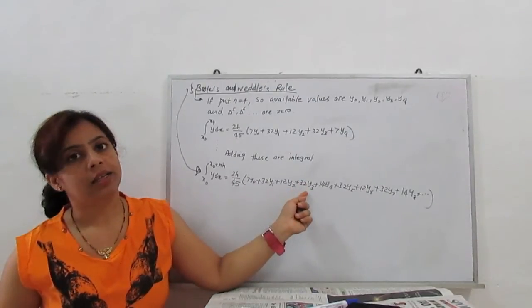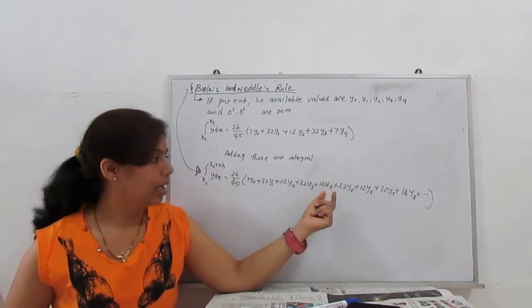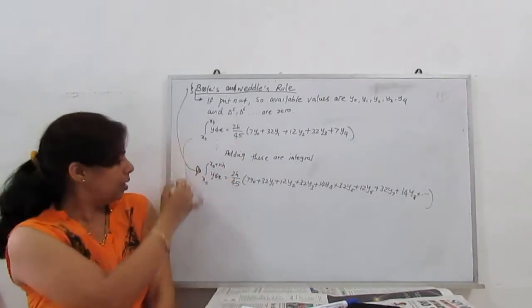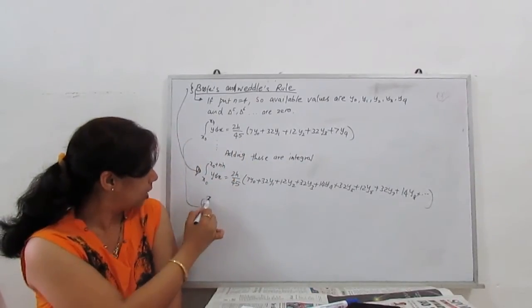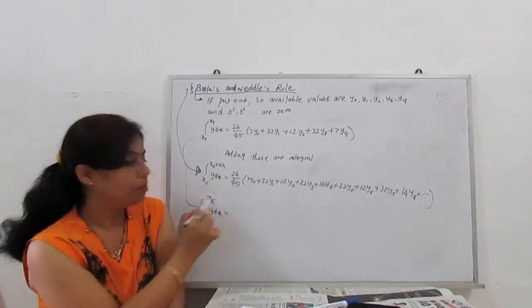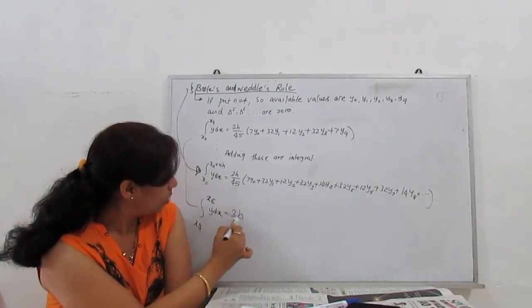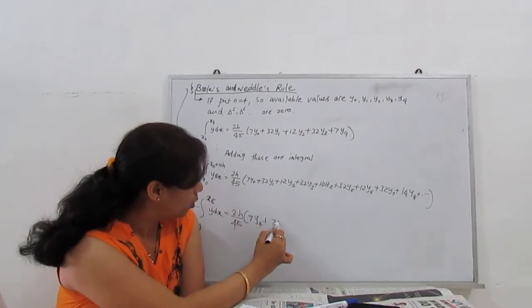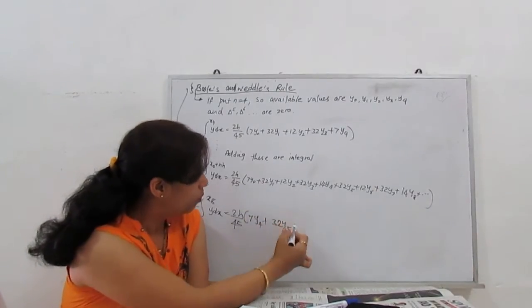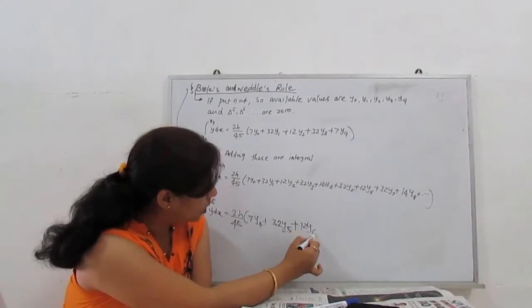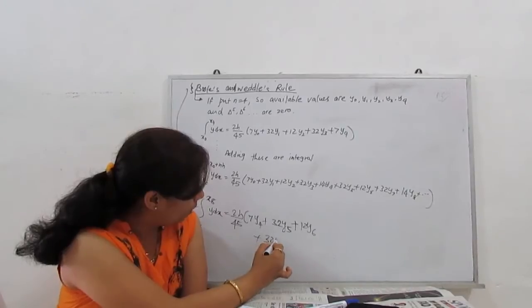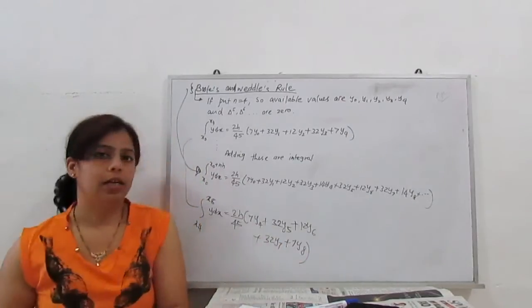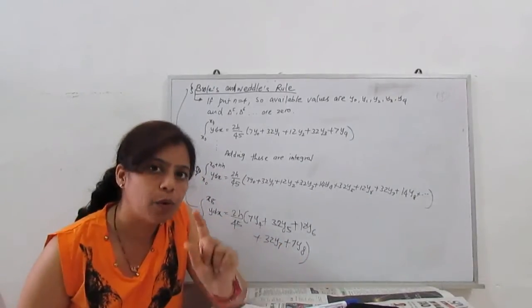...then 14. See, this term is 7y4, and for next integral x4 to x8, y dx. If we talk about x4, what is this? 2h by 45, 7y4 plus 32y5 plus 12y6 plus 32y7 plus 7y8. Clear? So this is our second interval, x4 to x8. Similarly, third interval x8 to x12, like that.